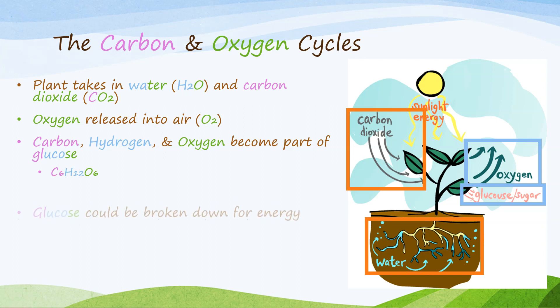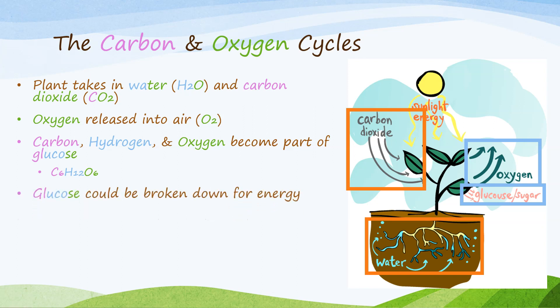One option is that the glucose could be broken down inside the plant cells and used for energy, just like humans and animals break down their food in their cells for energy. When this happens, they release carbon dioxide and water into the air. Yes, plants do release some carbon dioxide just like we do, but they take in more than they give off.